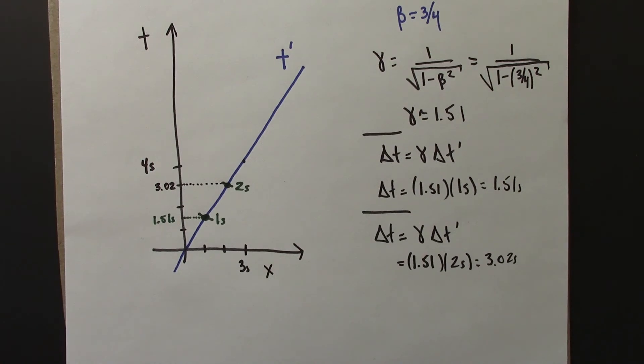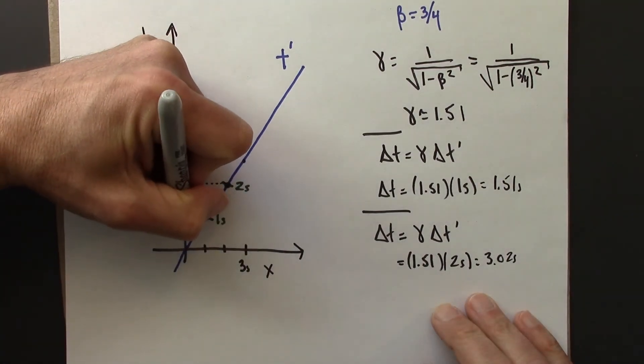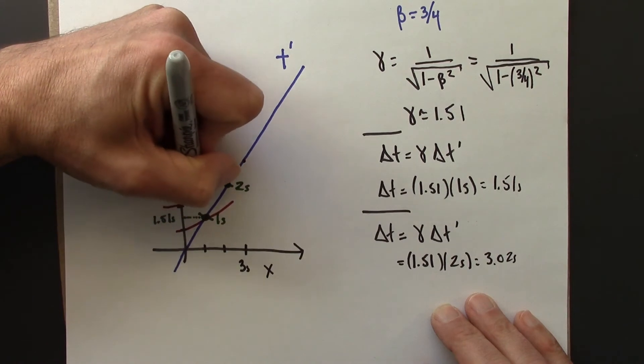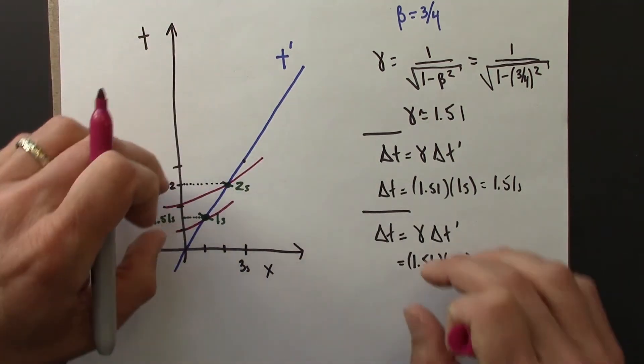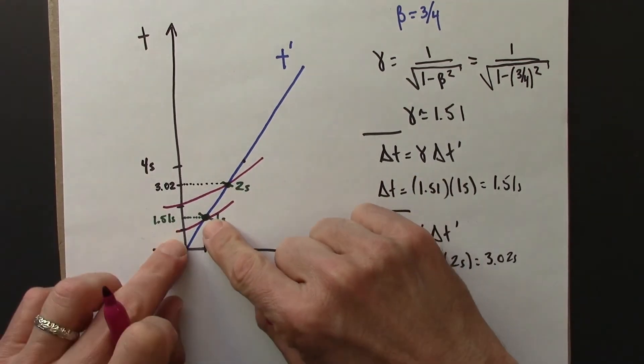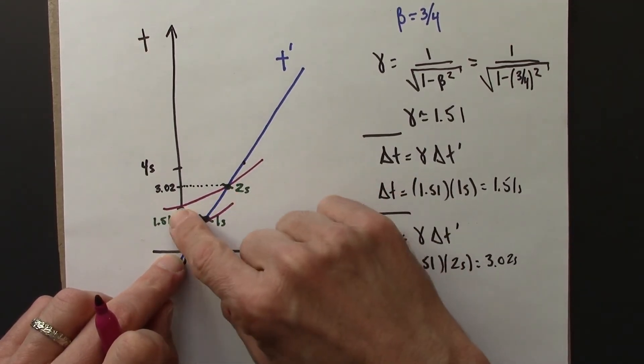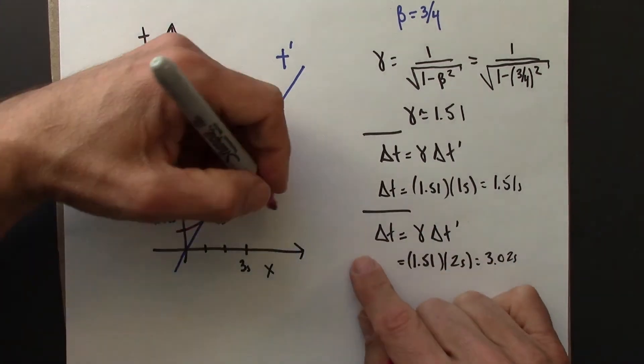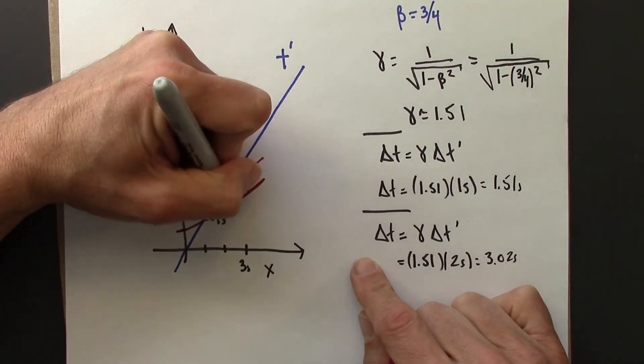And I should mention, these are not great drawings. The 1 second and 1 second, 2 second and 2 seconds, those are connected with hyperbolas. These are supposed to be parallel.